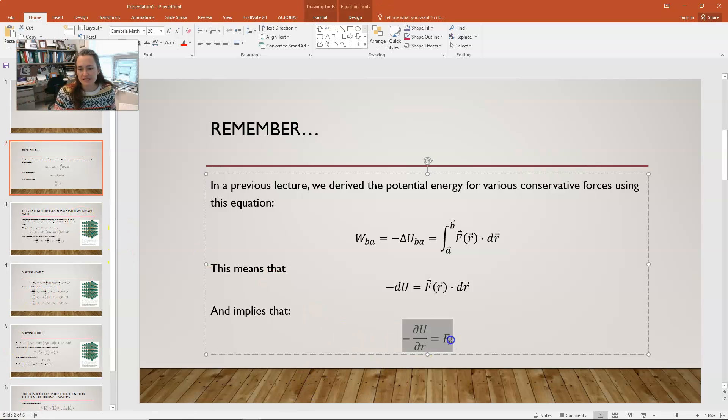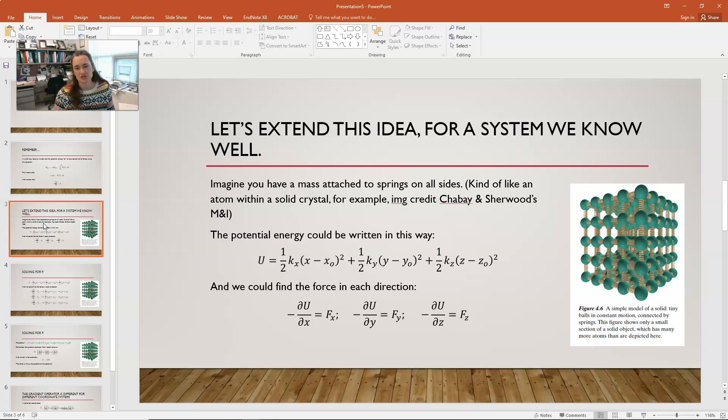So, let's extend this equation that we just kind of really quickly showed here to a three-dimensional system. So, let's imagine that we have a mass attached to a spring on all sides, kind of like those models that we're using extensively in earlier chapters of our textbook Matter and Interactions, where we were modeling a solid as little balls connected by little springs, where the ball is the atoms and the springs are the bonds in between the atoms.